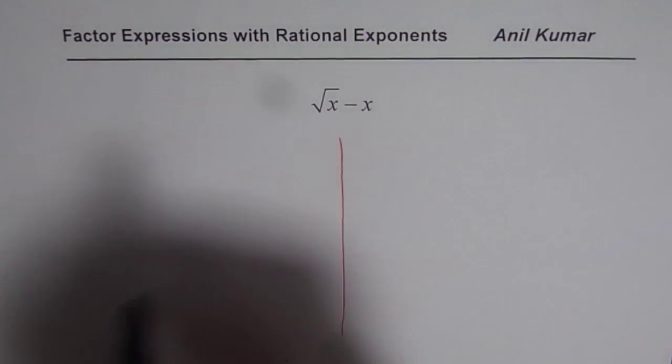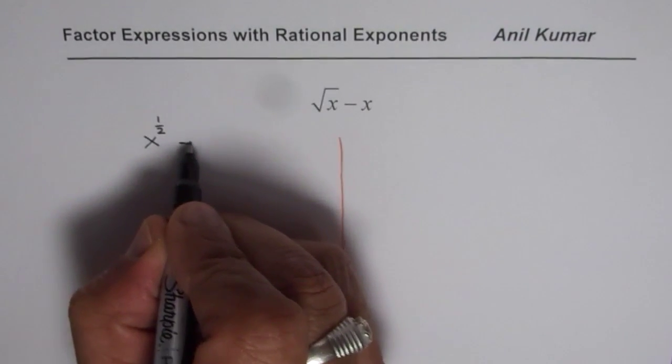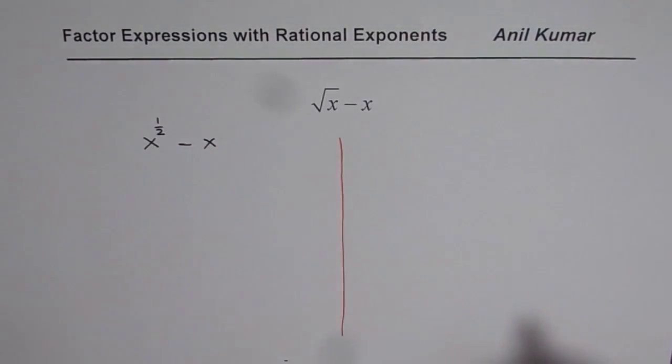Now √x can be written as x^(1/2), and x is x^1. There is no need to write the 1.